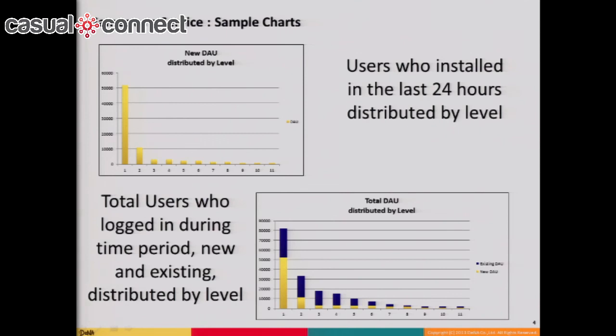Here's another example of level progression looking at your total DAU distributed by both existing and new users — none of this data is actually real, by the way. You can cohort your one-day users, two-day users, and actually begin to A-B test new user flows that explain the game in tutorials in different ways, to see if getting players past a certain point of engagement makes them more likely to stay in the game.